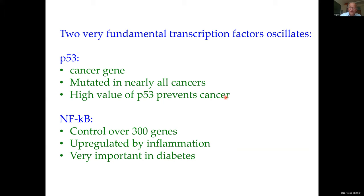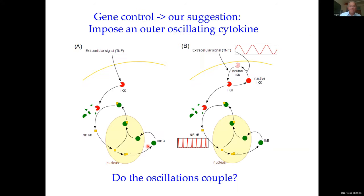Many of you probably know these two very fundamental transcription factors. P53 is a famous cancer gene — probably one of the most studied proteins in the world — mutated in basically all cancers. A high value of P53 prevents cancer but also leads to apoptosis, so it's a delicate balance. NF-κB is another famous transcription factor controlling over 300 genes — probably actually 500 — upregulated by inflammation, and many people in diabetes research study NF-κB. Here I have a schematic picture of the NF-κB system: NF-κB promotes IκB, an inhibitor, and they bind to each other.